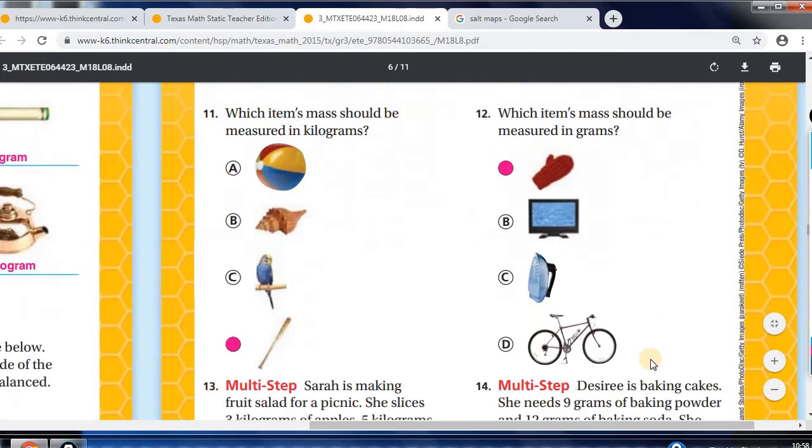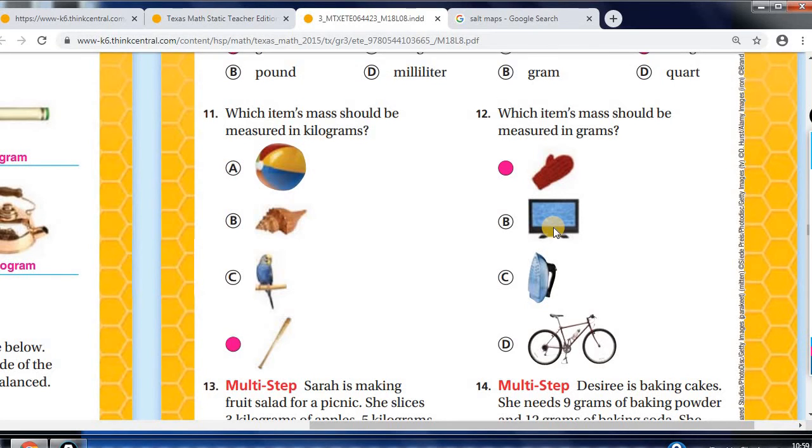So the next one, same type of questions. Which items mass should be measured in kilograms? So all of these are pretty light objects, to say the least. So your baseball bat will be measured in kilograms. Now you have the opposite here. You got large items. Which items mass should be measured in grams? It's not to say you can't measure these in grams. You can convert it into grams. But if you were going to use one unit, which one would it be to make it easier on you? It would be the gloves. You would use grams to measure that one.